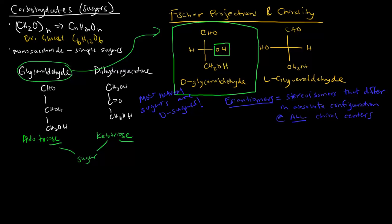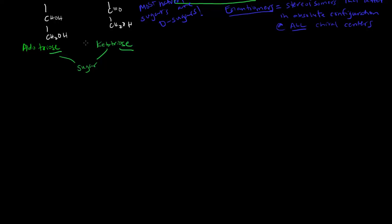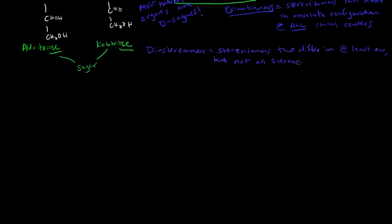There are also things called diastereomers. Diastereomers are stereoisomers that differ in absolute configuration at at least one but not all stereocenters. Because if they differed at all the stereocenters, they'd be enantiomers.